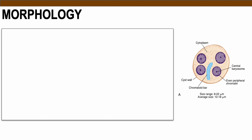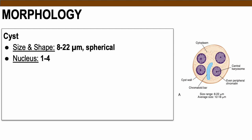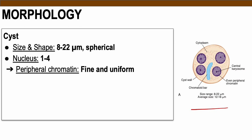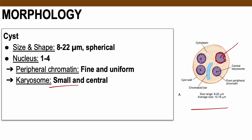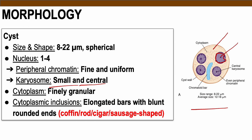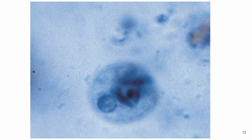In terms of the cyst form morphology of Entamoeba histolytica, these are spherical in shape and usually contain 1 to 4 nuclei. The higher the number of nuclei present in the cyst, the more mature the cyst is. The peripheral chromatin of the nucleus is fine and uniform. The karyosome — the small dot at the center of the nucleus — is small and central. The cytoplasm is finely granular. The cytoplasmic inclusions include the chromatoid bar, which is unique to the cyst stage. For Entamoeba histolytica, chromatoid bars are coffin-, rod-, cigar-, or sausage-shaped.